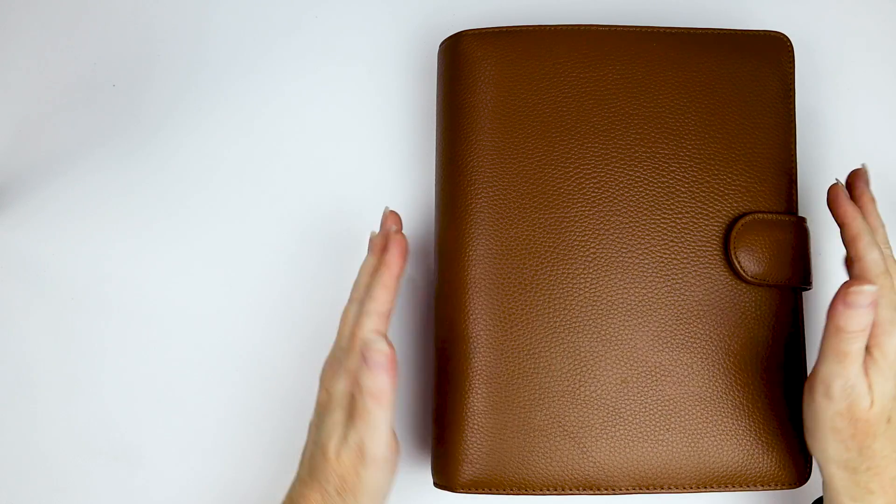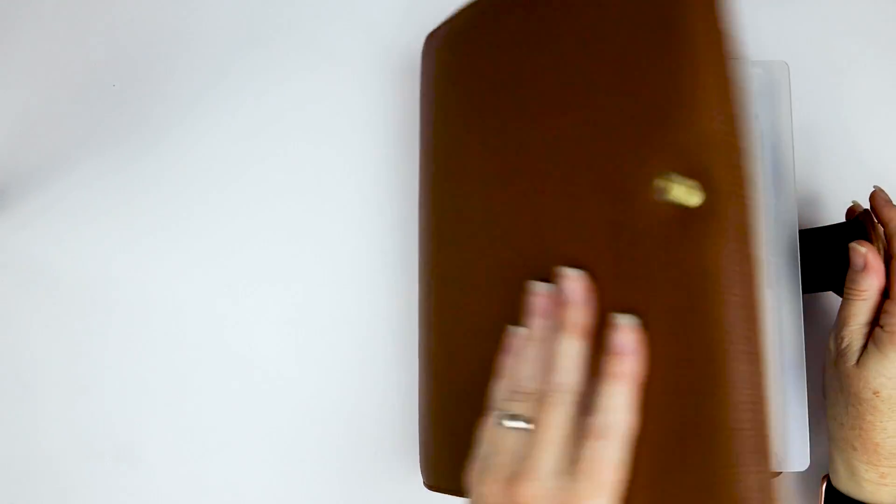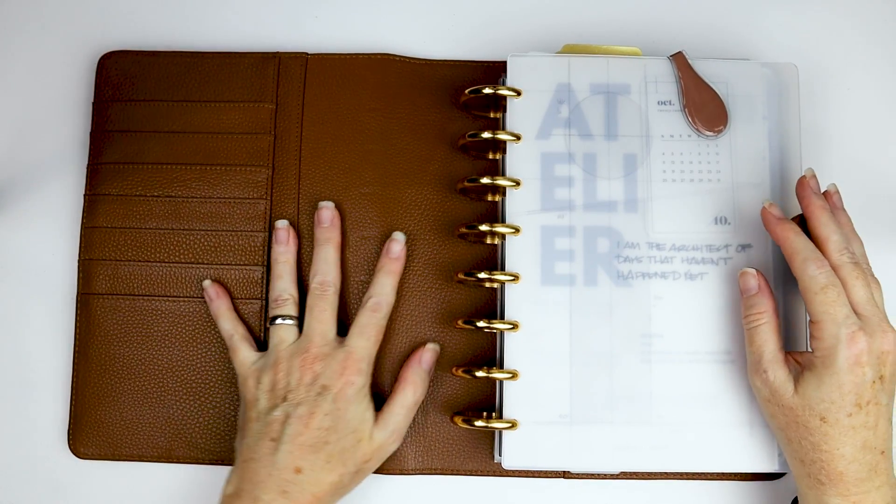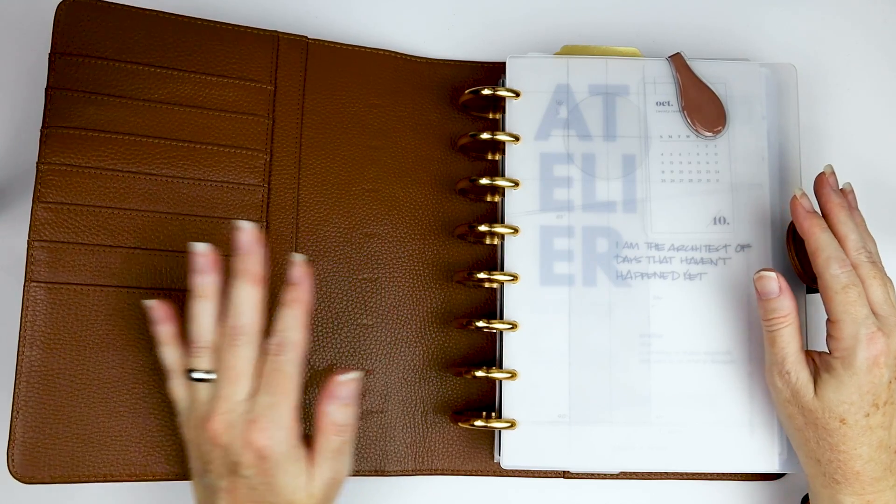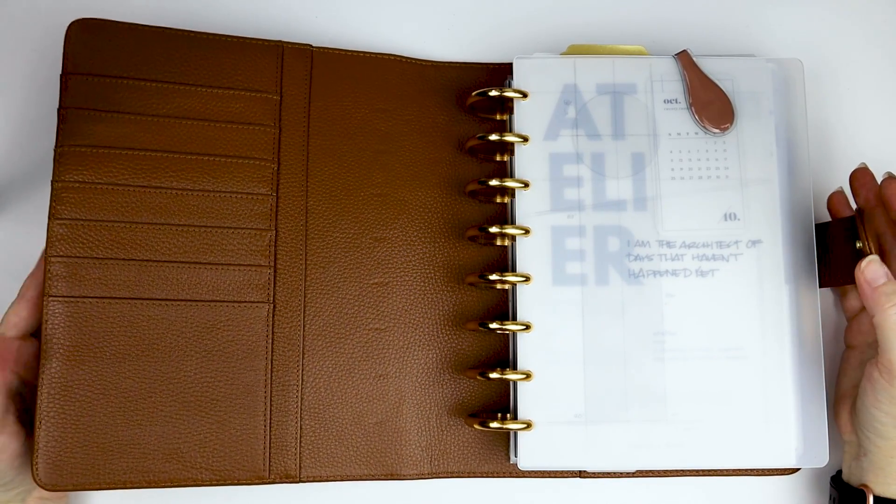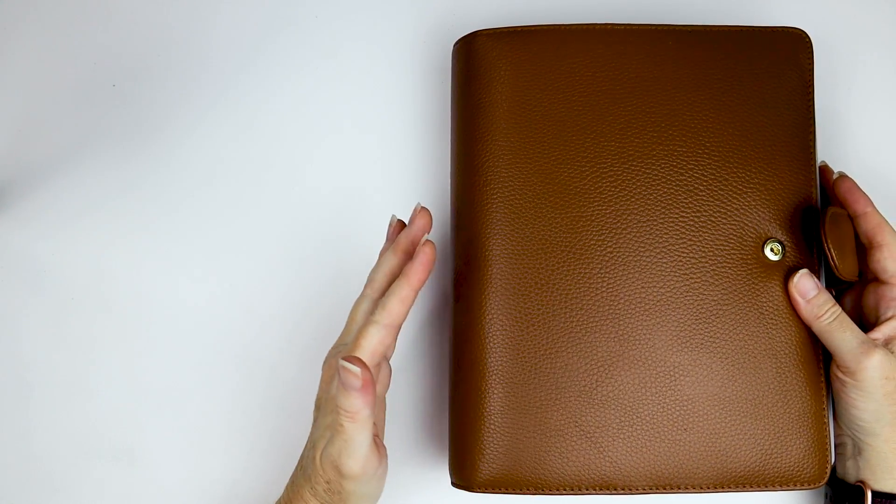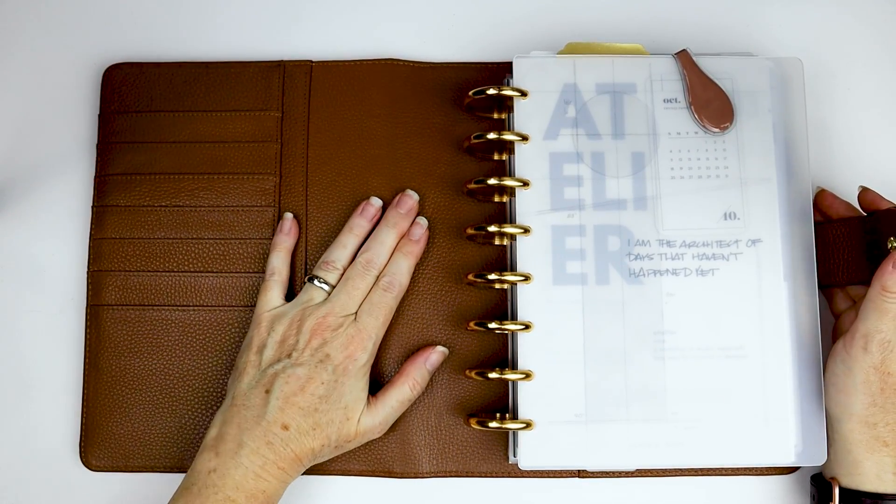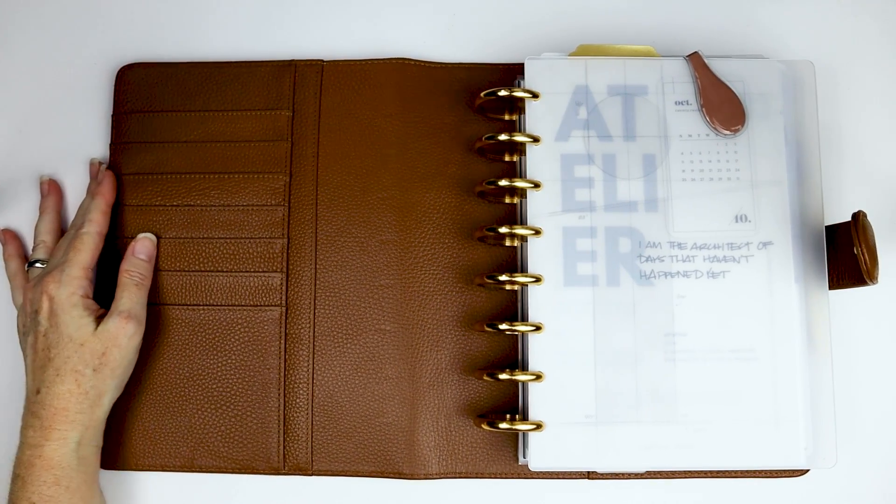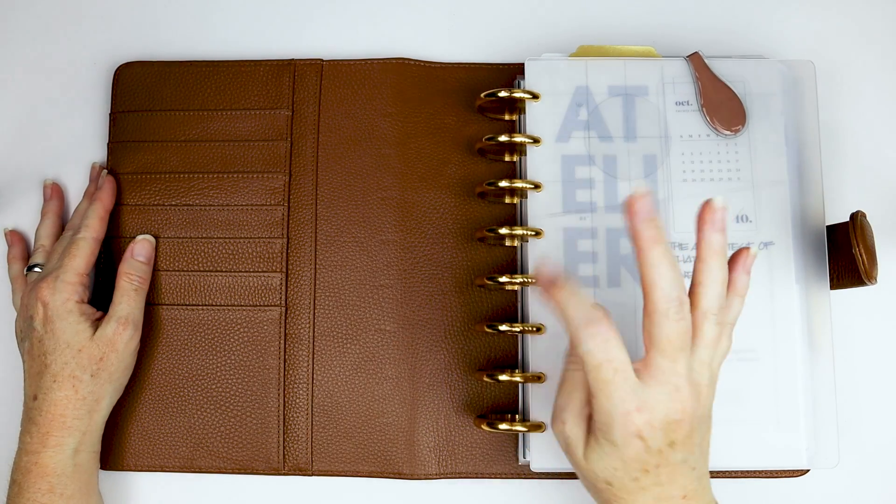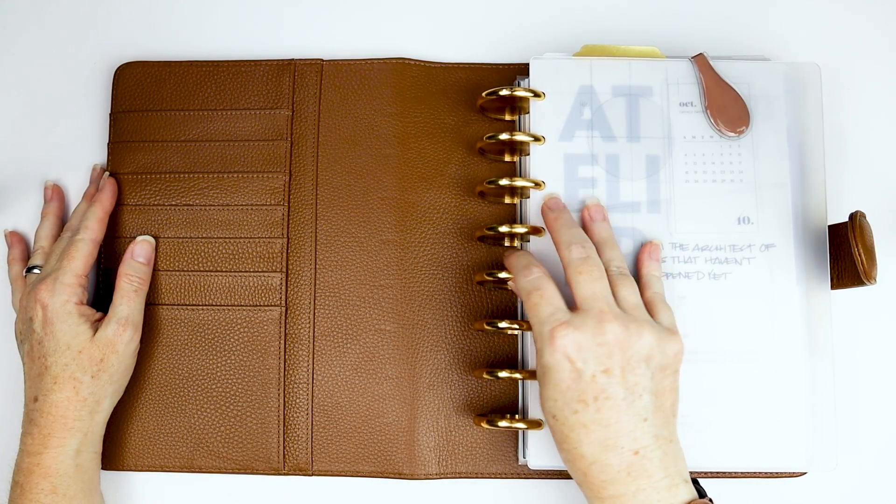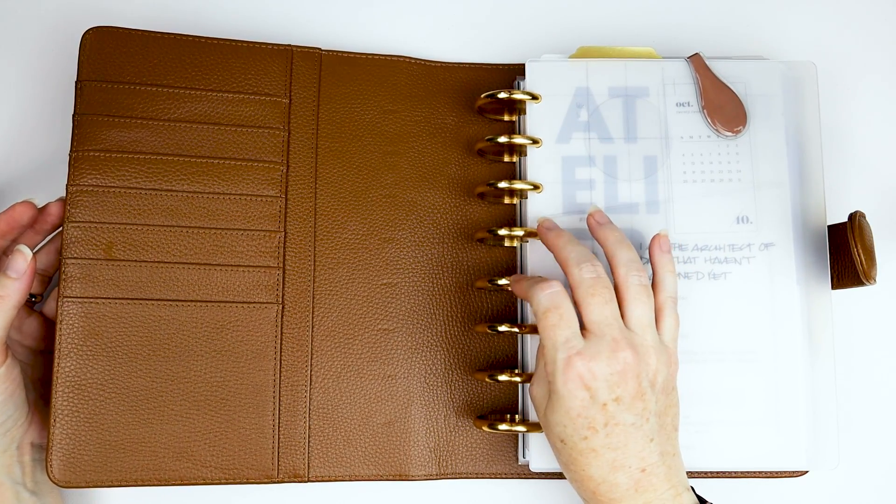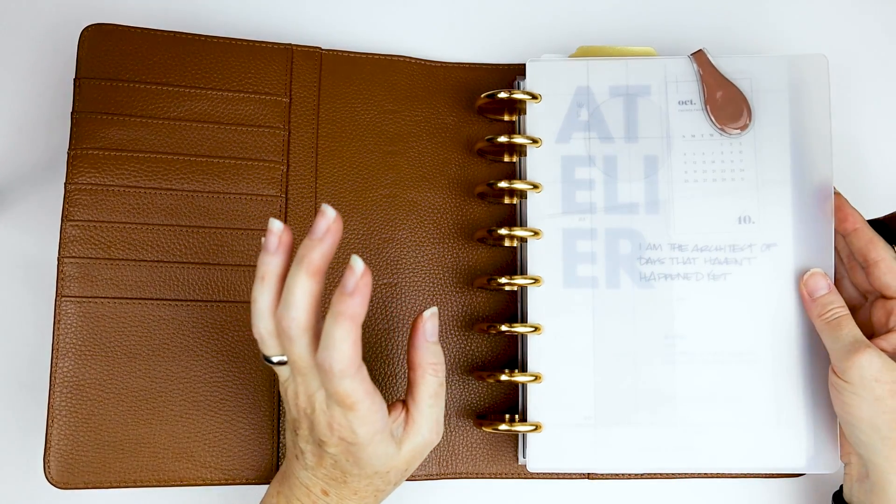But this one, I actually just got the cover today. This is from Cloth and Paper. It's their agenda cover in Saddle, which is actually very pretty. It's a medium brown color. And for whatever reason, it wasn't the color I was expecting, but I still like it. It looks really nice with the gold rings. These are inch and a half gold rings. They're from Staples, the ARC brand, but they're the aluminum ones, which means they turn really nice.